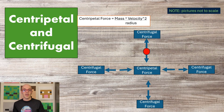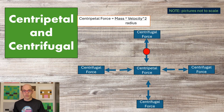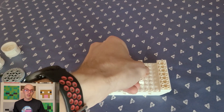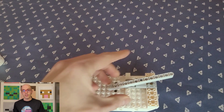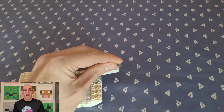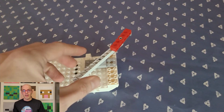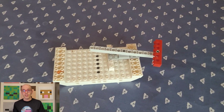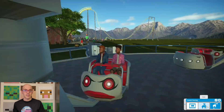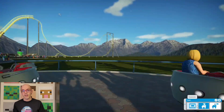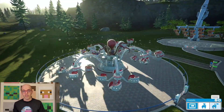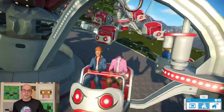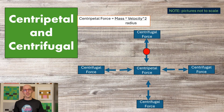Centripetal force is the inward force required to keep an object moving in a curved path. It is responsible for keeping planets in orbit around stars and objects in circular motion on Earth's surface. The strength of centripetal force depends on factors like the object's mass, velocity, and the radius of its path. In the real world, centripetal force is evident in phenomena such as satellites orbiting the Earth and vehicles navigating sharp turns. In video games, centripetal force is simulated to create realistic physics, affecting the dynamics of rotating objects and vehicles handling in curved paths. Games like Planet Coaster incorporate centripetal forces to dictate how rides maneuver around corners.